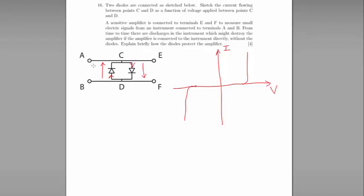If the voltage is relatively low, it would be in this region of the chart here. So no current will be conducted through the diodes, which means that all the current will flow from A to E through the equipment from F back to B.